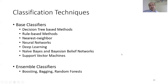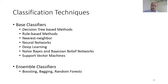Techniques used for classification include decision tree-based methods, rule-based methods, nearest neighbor methods, neural networks, deep learning, Naive Bayes, Bayesian belief networks, and support vector machines. We also have ensemble classifiers like boosting, bagging, and random forests.